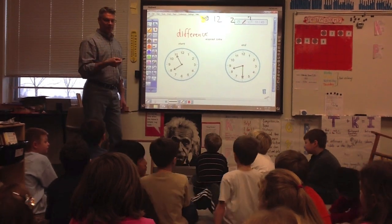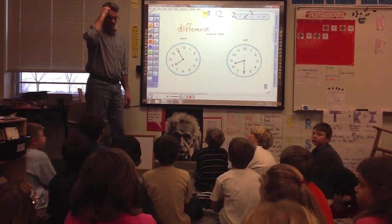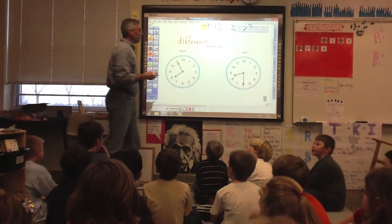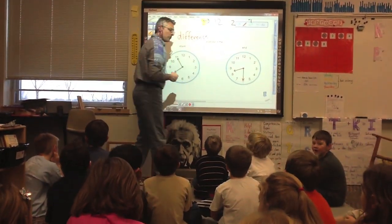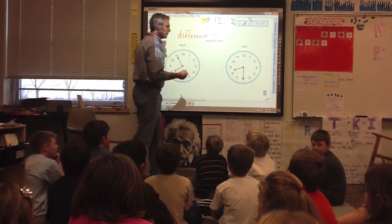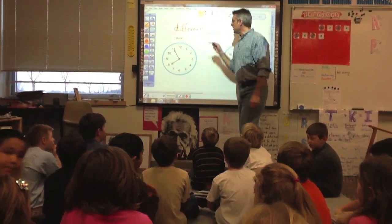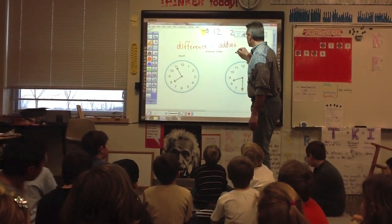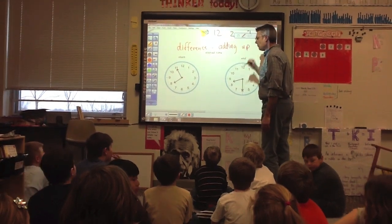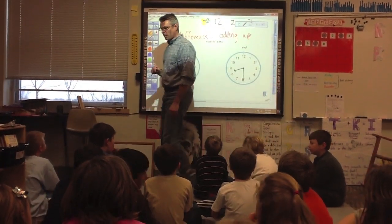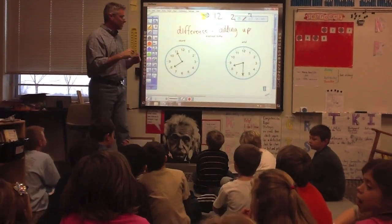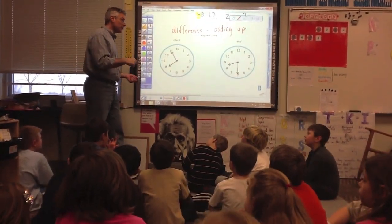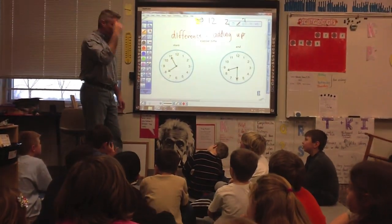Yesterday we realized, didn't we — Aubrey, Avery — that one of the best ways to find the difference was to use a strategy for subtraction. We found out that adding up is about the best strategy we could find. We didn't have to regroup, we didn't have to worry about that pesky regrouping of minutes, because we can't regroup 100 minutes — we can only regroup 60 minutes. And it just worked out perfectly.